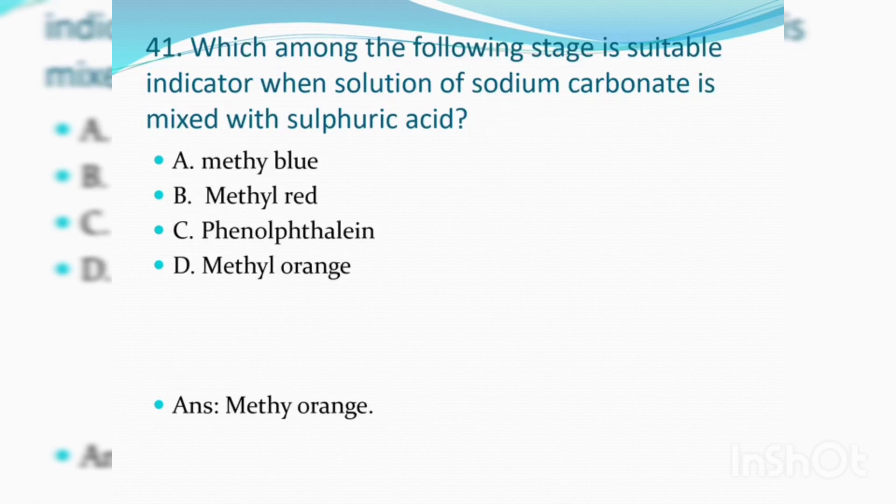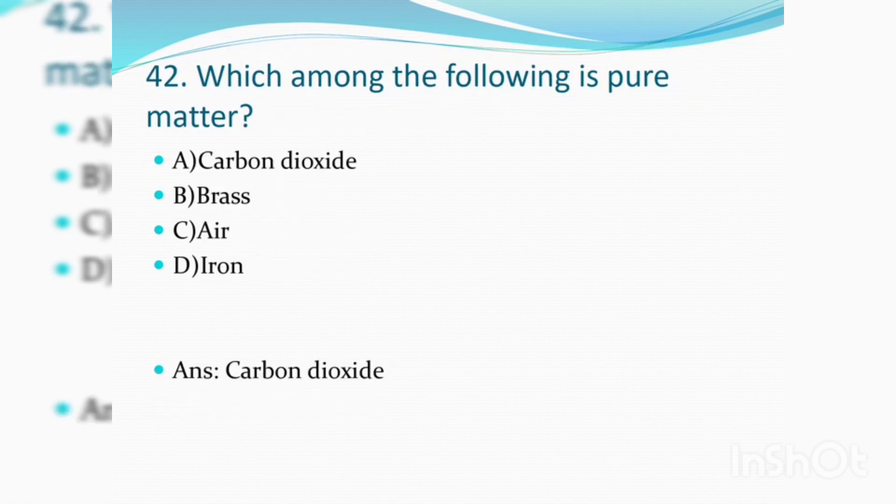Which among the following is a suitable indicator when solution of sodium carbonate is mixed with sulphuric acid? Answer is methyl orange. Which among the following is pure matter: carbon dioxide, brass, air, or iron? Answer is carbon dioxide.